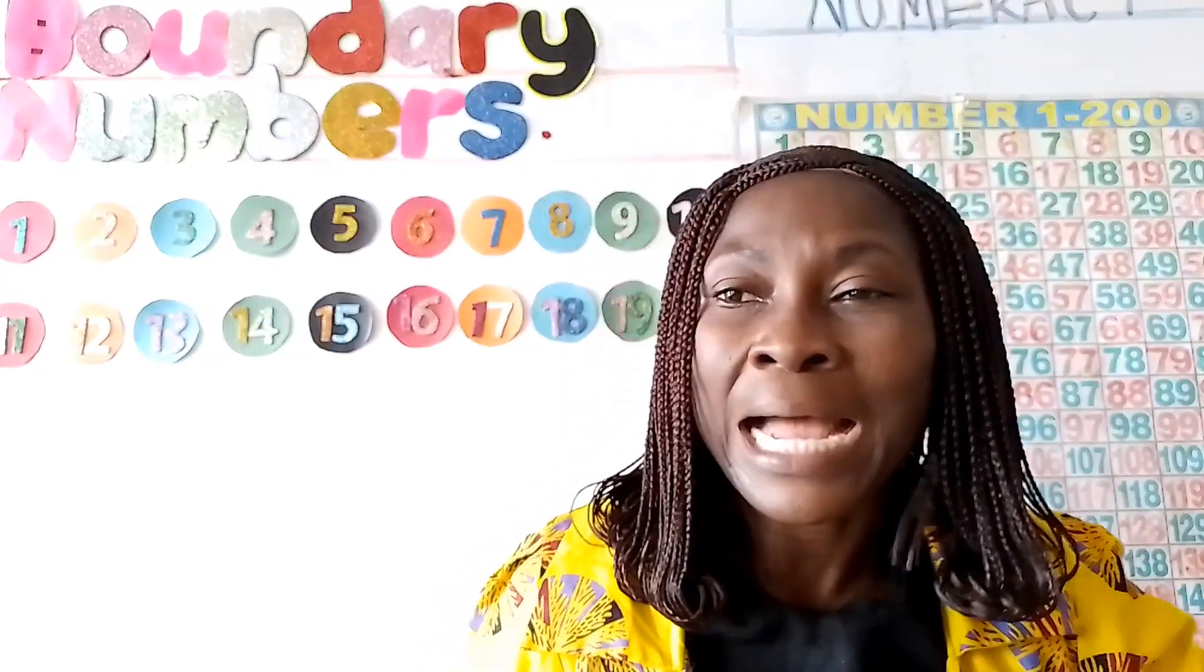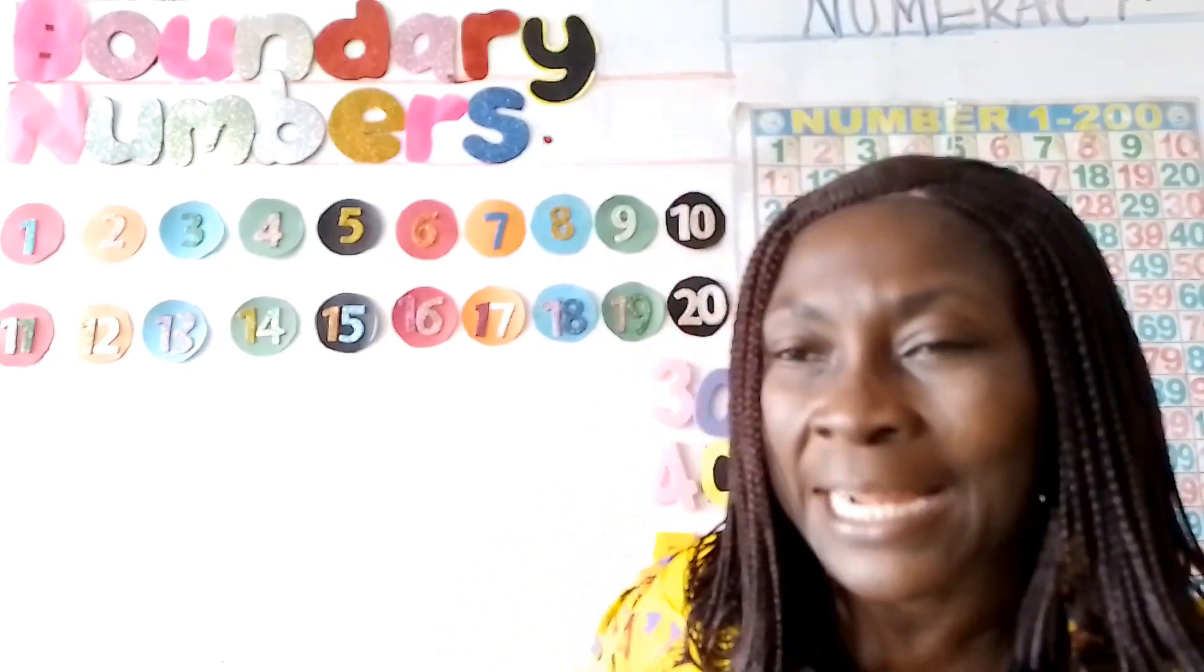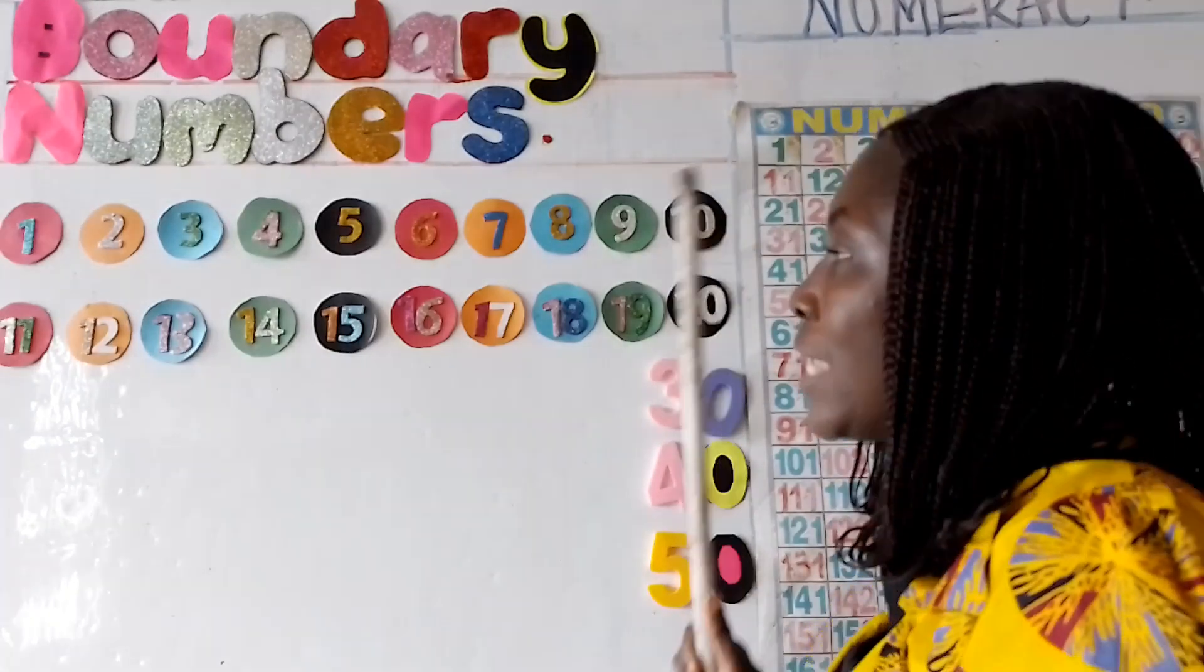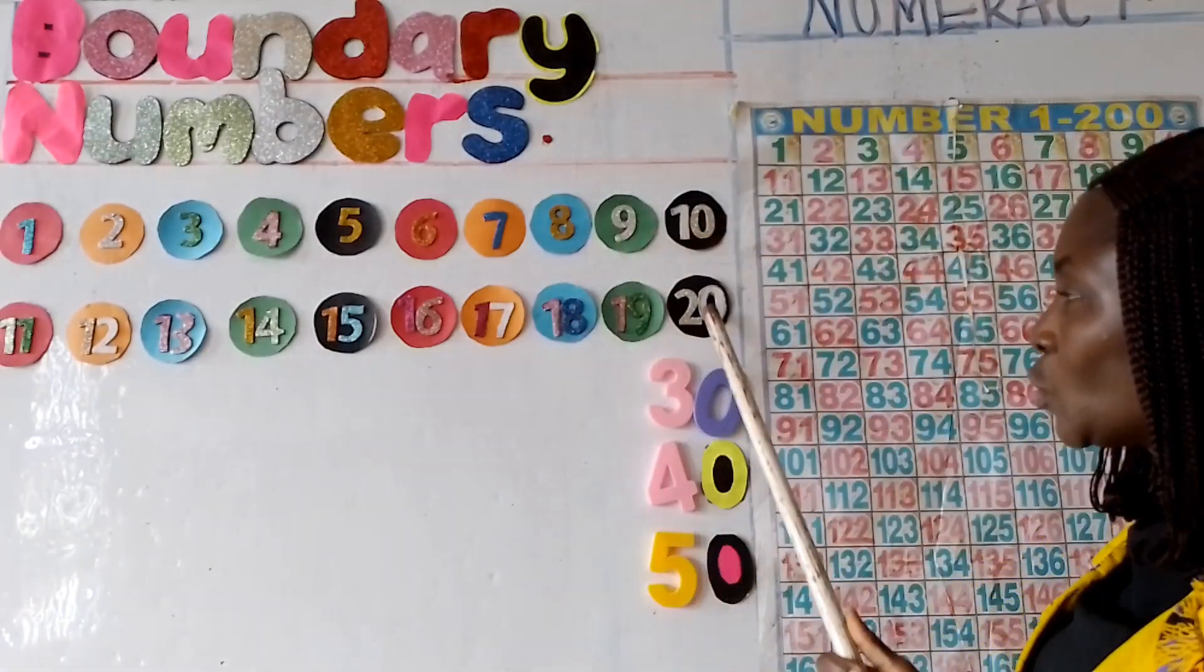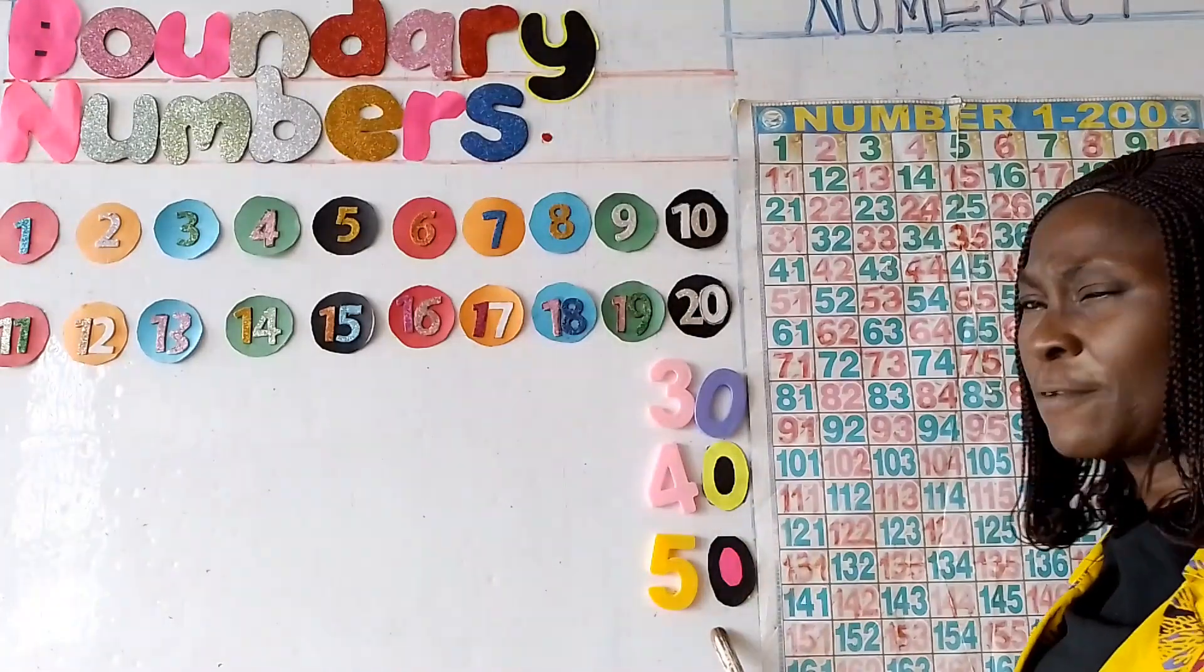In numeracy, we round numbers that fall between on the number line. If we are rounding the number to the nearest 10, then the boundary numbers would be the multiples of 10. For example, 10, 20, 30, 40, 50.